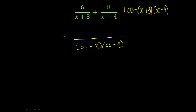In order to get a common denominator of (x + 3) times (x - 4) for our first fraction, I had to multiply, and I'll write it out here, I had to multiply both the top and the bottom by (x - 4). So that means my numerator is going to become 6 times (x - 4).